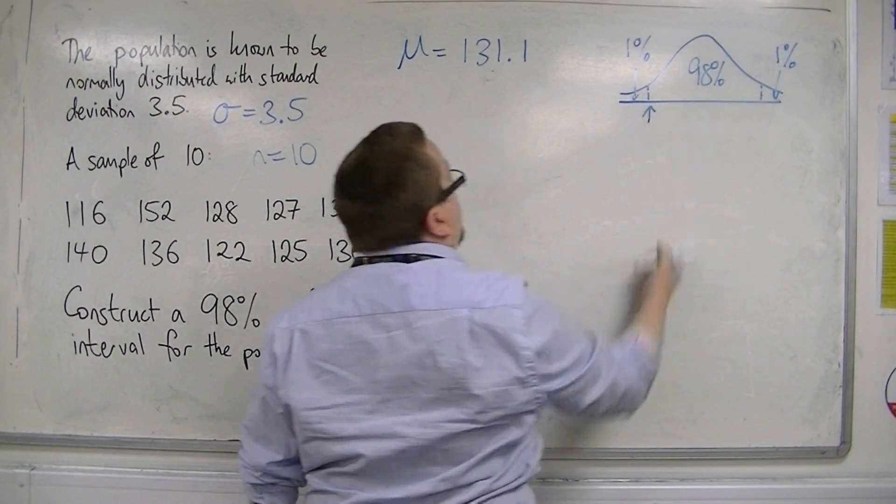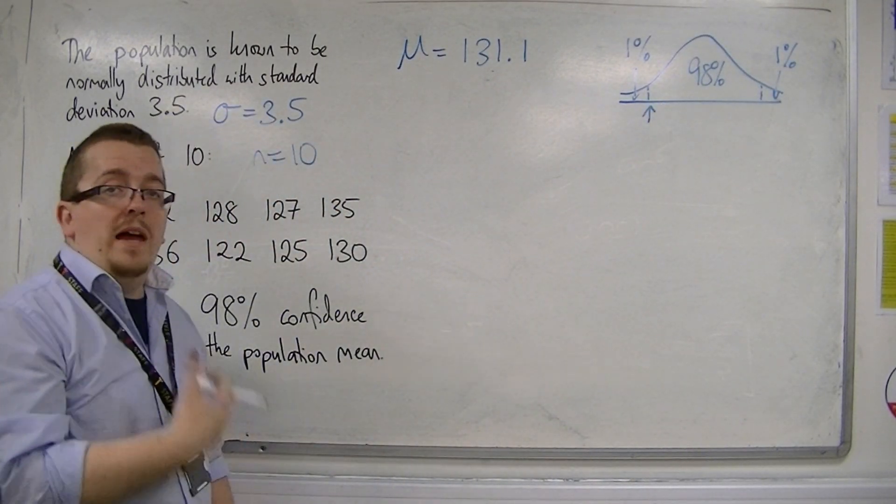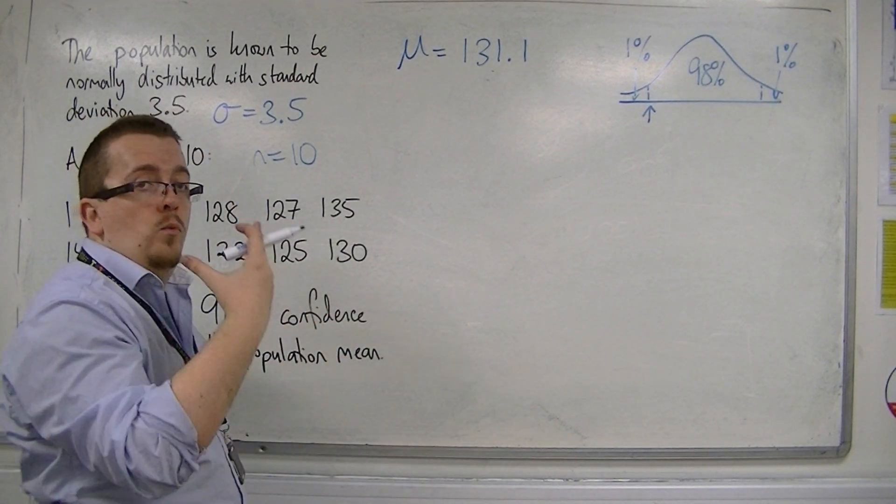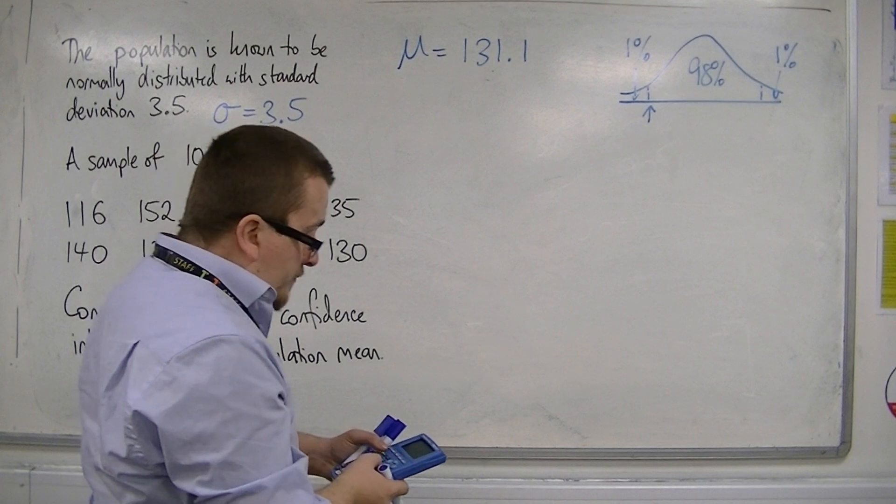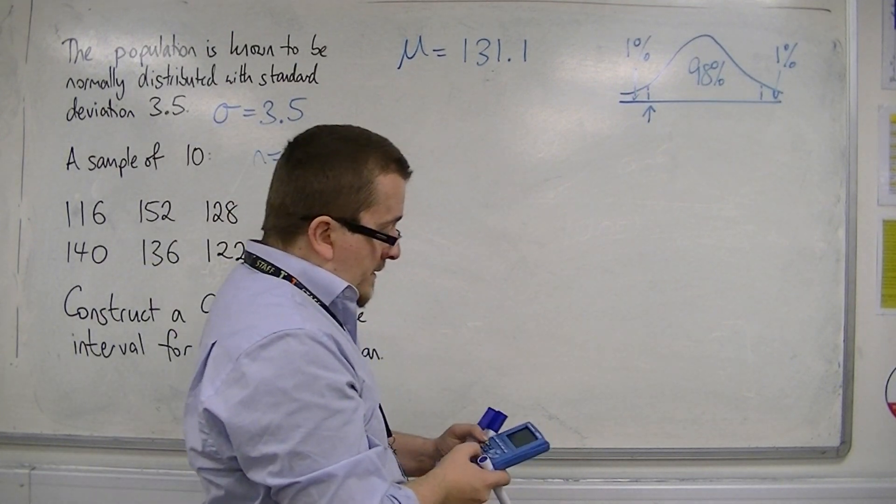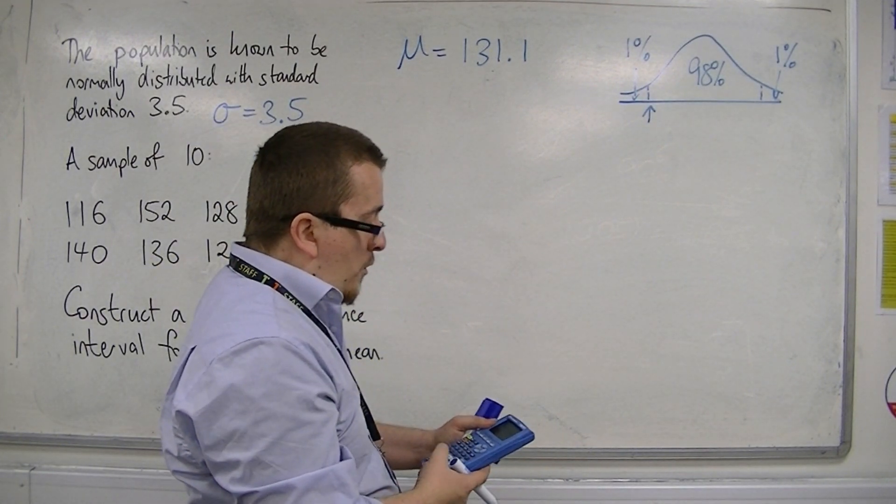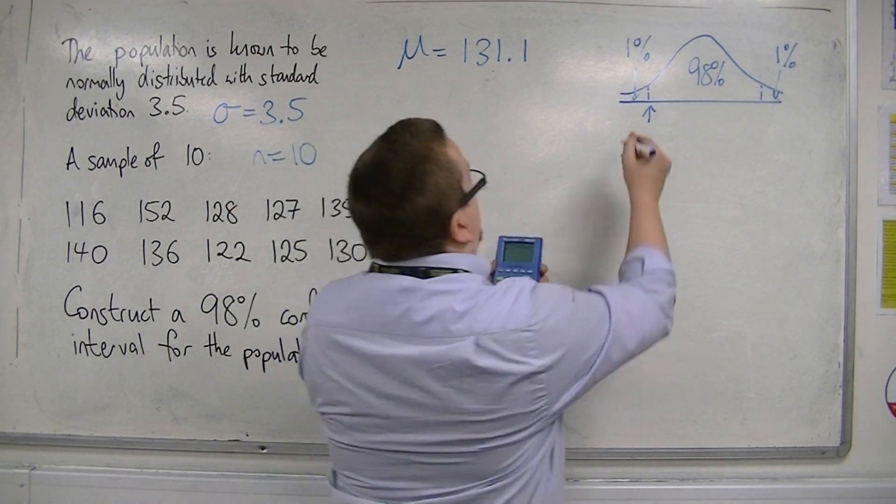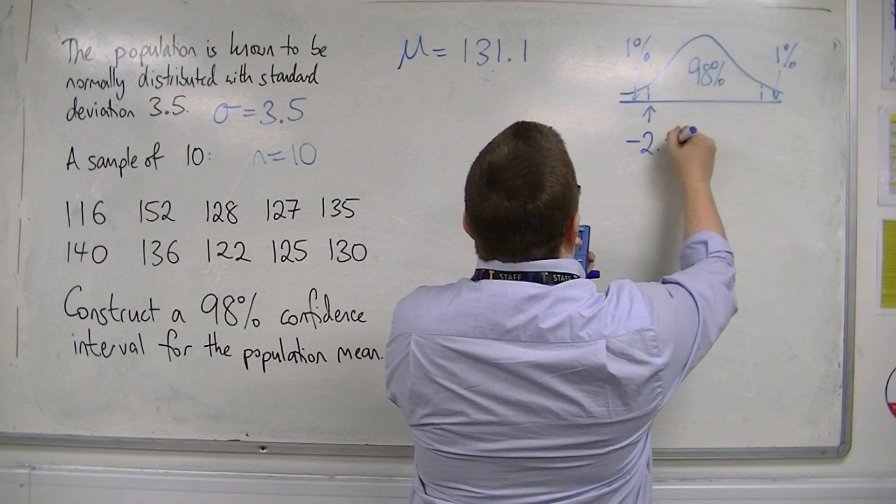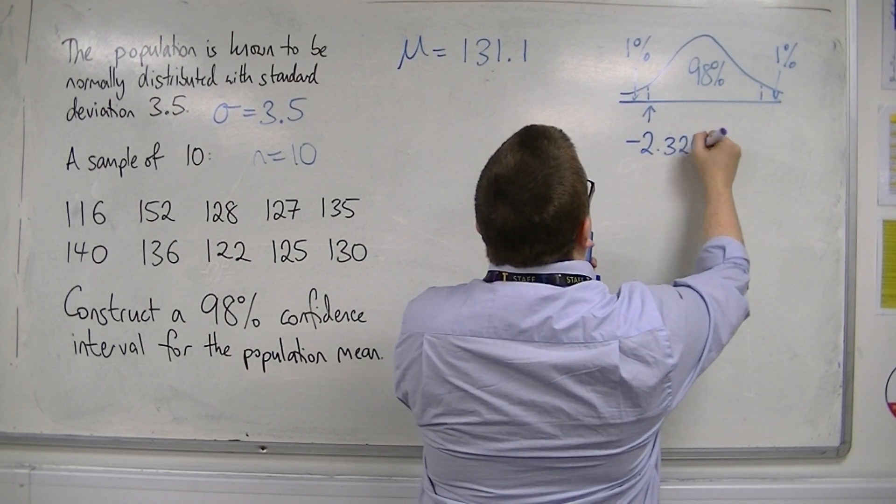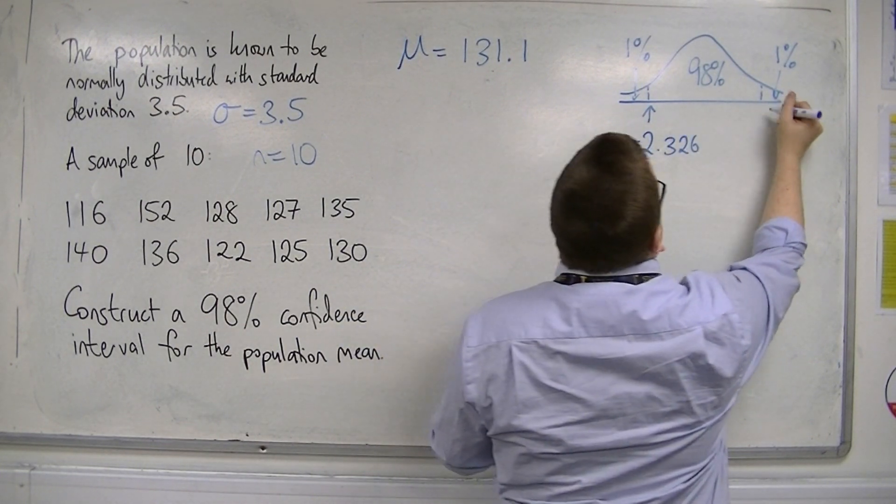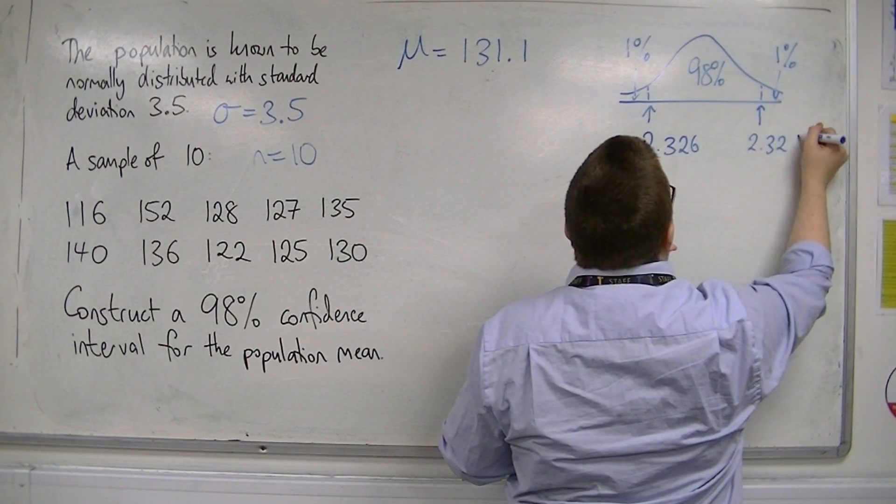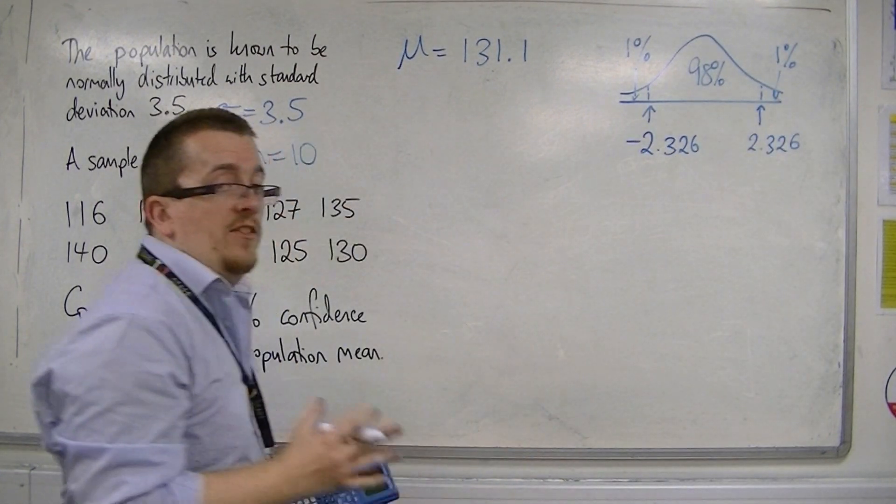So, I need the z value that goes with 1%. And that will be the inverse norm of 0.01. So, if we do that, inverse norm of 0.01, or you can look this up in the formula booklets. So, you get minus 2.326. And then this value will be positive 2.326. So, three decimal places.